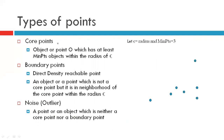Let us know a few more terms. There is the core object, also called a core point, then there are boundary points, and then we have outliers or noise points. A core point is an object O that has at least min points number of objects within the radius of epsilon. A boundary point is a point that is direct density reachable from a core point O. And if a point is neither a core point nor a boundary point, it is called noise.